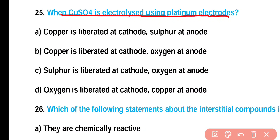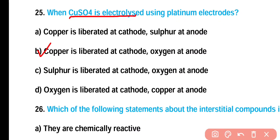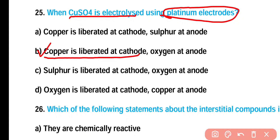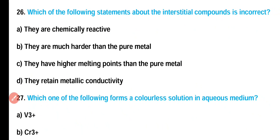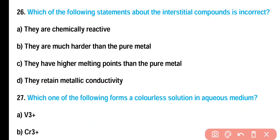Question number 25: When copper sulfate is electrolyzed using platinum electrodes — (A) copper at cathode and sulfur at anode, (B) copper at cathode and oxygen at anode, (C) sulfur at cathode and oxygen at anode, or (D) oxygen at cathode and copper at anode? Correct answer is option B. Copper is liberated at the cathode and oxygen is released at the anode.